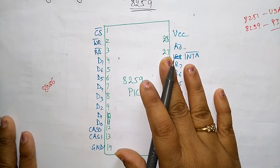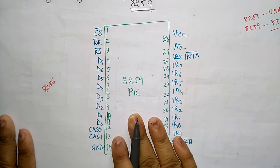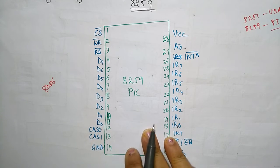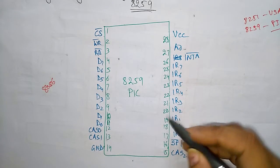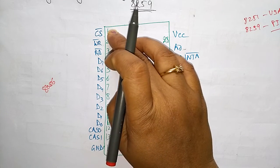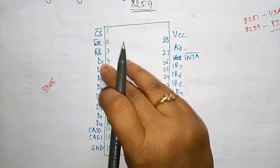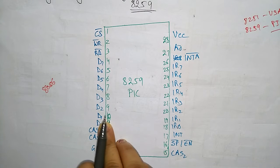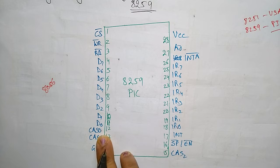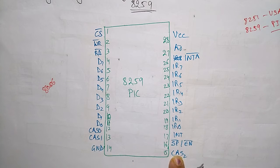This 8259 PIC is a 28-pin DIP package, so one side has 14 pins and another side has 14 pins. The first pin is connected to the chip selection, read/write, and eight data bits that are connected to these pins. Three cascading lines will be there: CS0, CS1, and CS2, ground pin, SP/EN pin, interrupt pin.